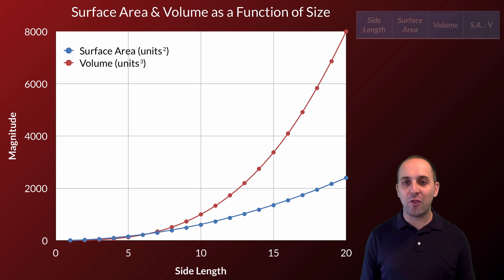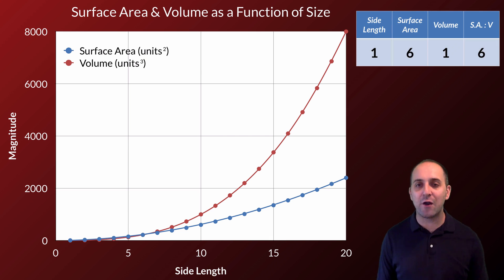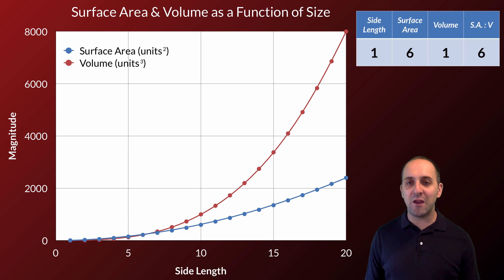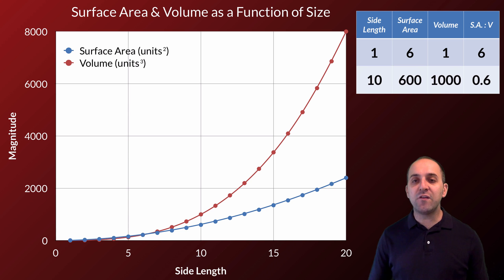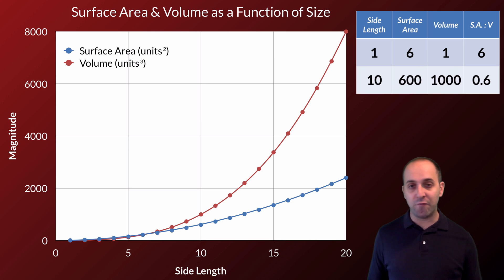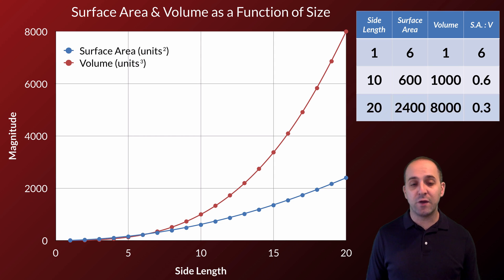Let's investigate this in more detail. We have side length, surface area, volume, and the surface area to volume ratio. At a side length of one, the surface area is six and the volume is one — a surface area to volume ratio of six. At a side length of ten, the surface area is 600 squared units and the volume is 1,000 cubed units. Our surface area to volume ratio has dropped by a factor of ten. Going up to a side length of 20, the ratio is halved yet again — now only 0.3 units of surface area to support every unit of volume.